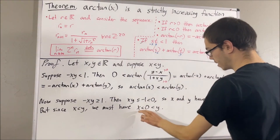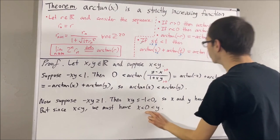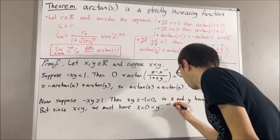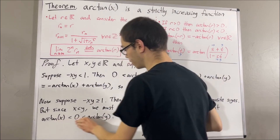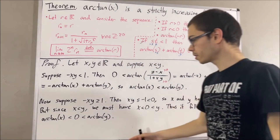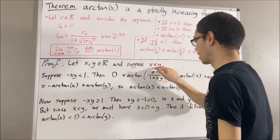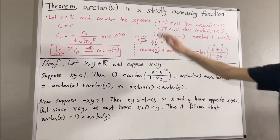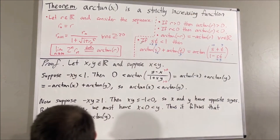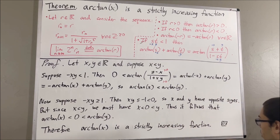Since x is less than 0, it follows that arctangent of x is less than 0. Since y is greater than 0, it follows that arctangent of y is greater than 0. And so we see that arctangent of x is less than arctangent of y. This completes all cases. Given any two real numbers x and y, if x is less than y, then arctangent of x is less than arctangent of y. That proves that the arctangent function is a strictly increasing function, and this completes the proof.